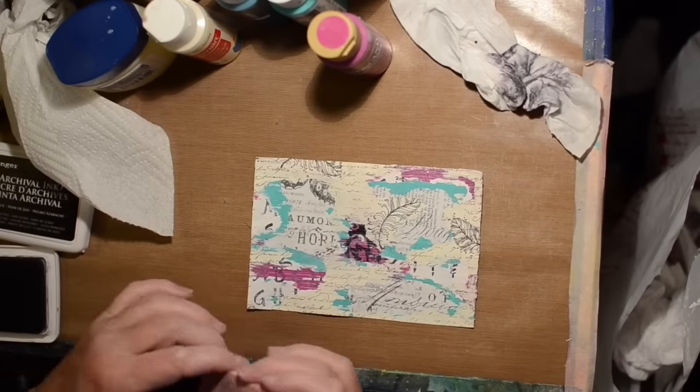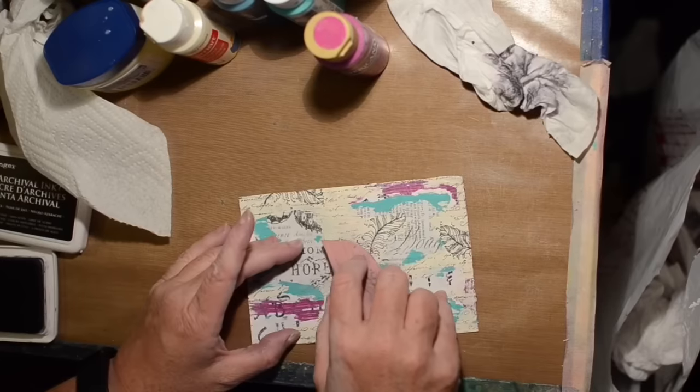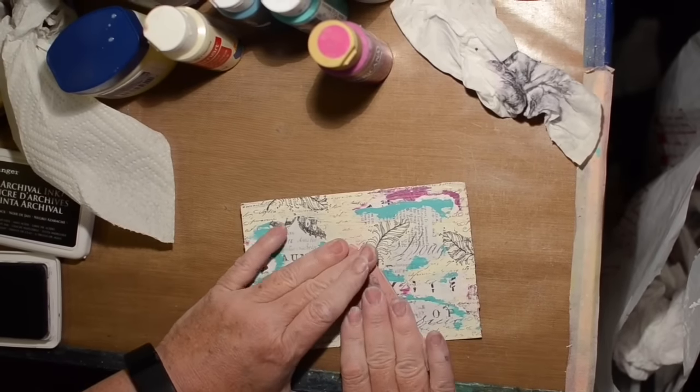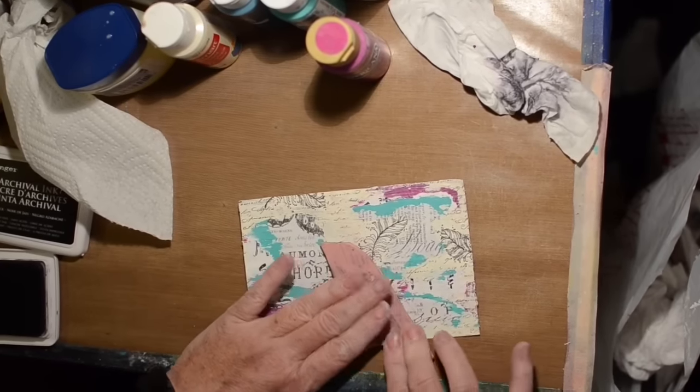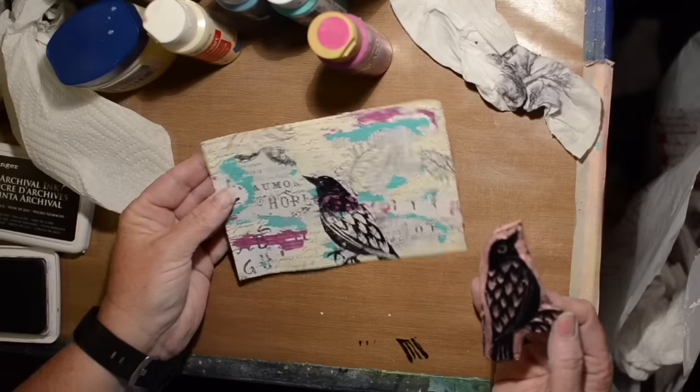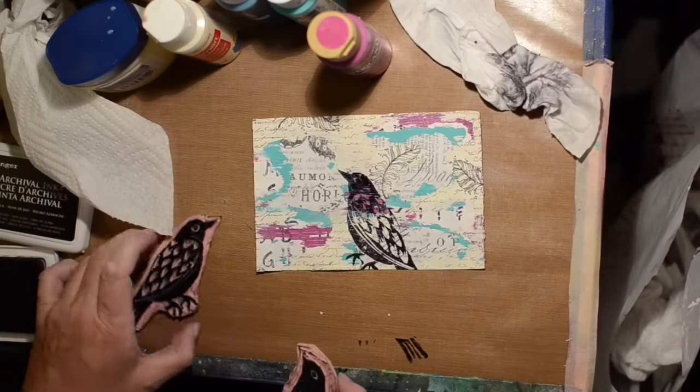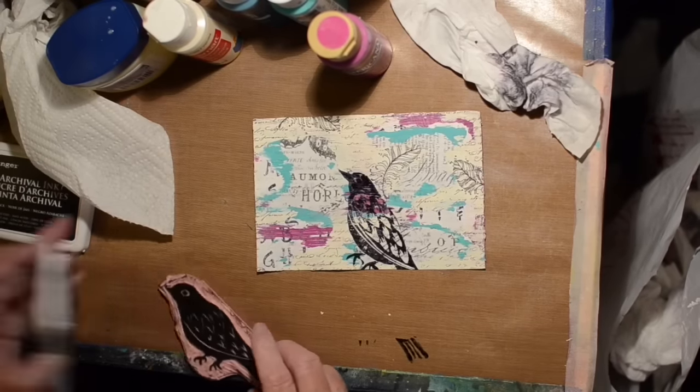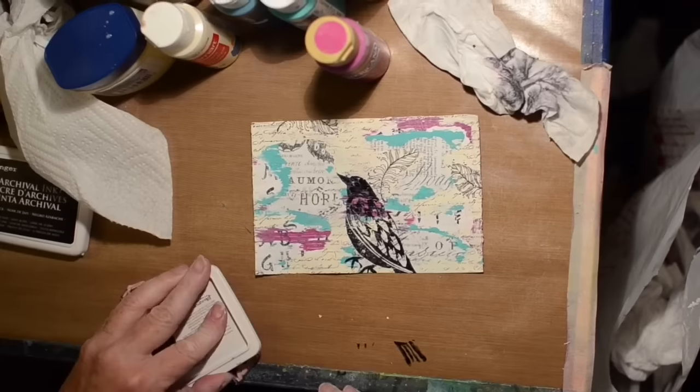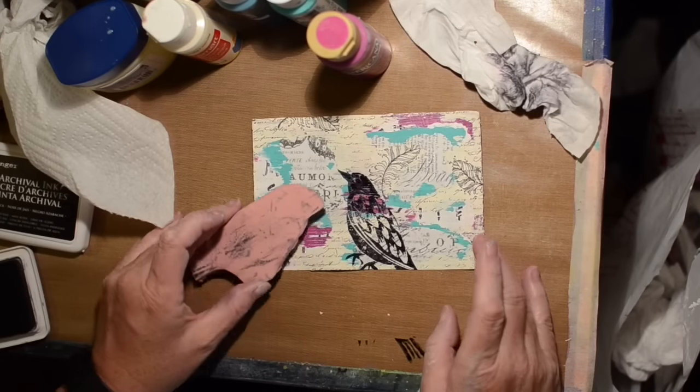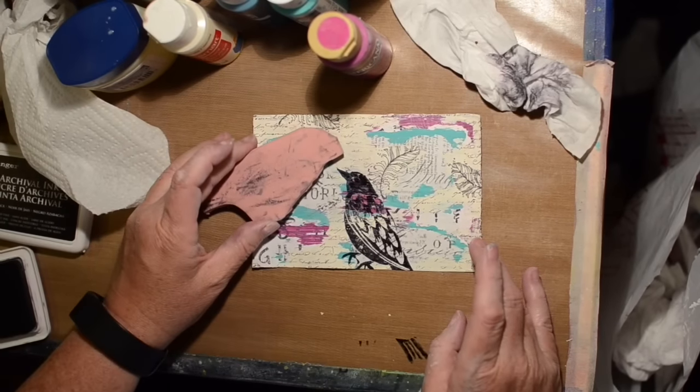Yeah. So here we're going to fix the bird. That looks better. And now he needs a friend. So we're going to put another one on there. And these are just stamps I made. Deciding where to put them.